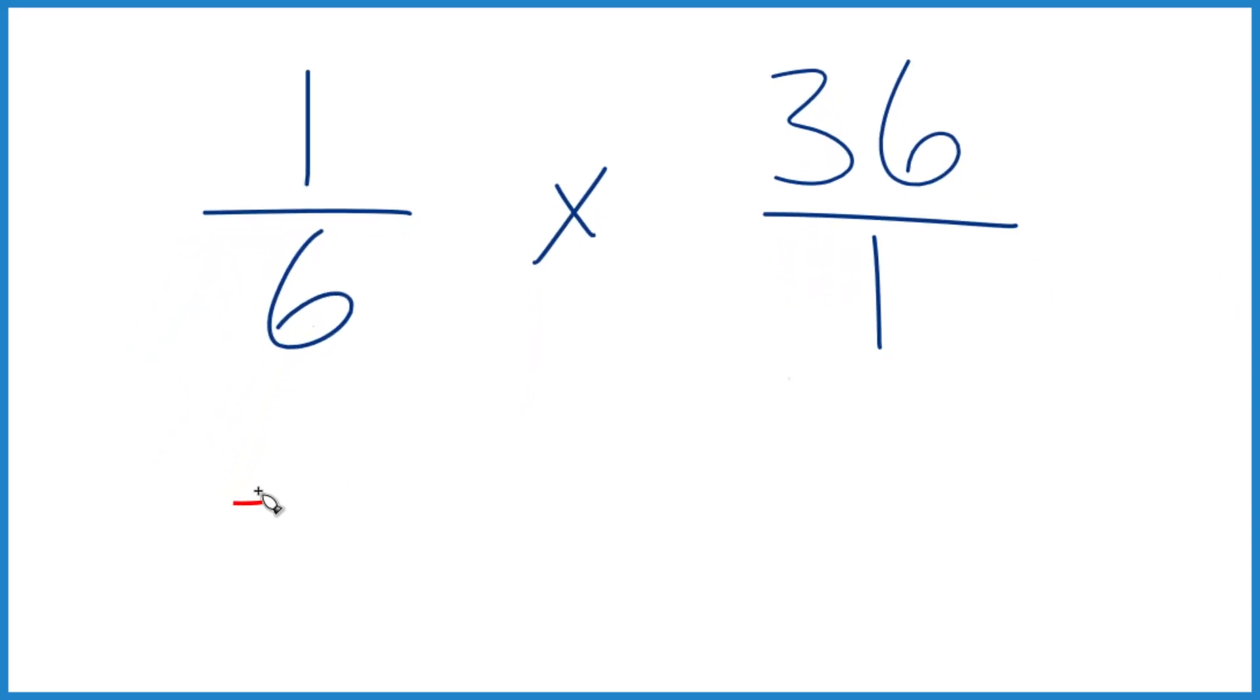So we can say 1 times 36, that equals 36. 6 times 1, that equals 6.